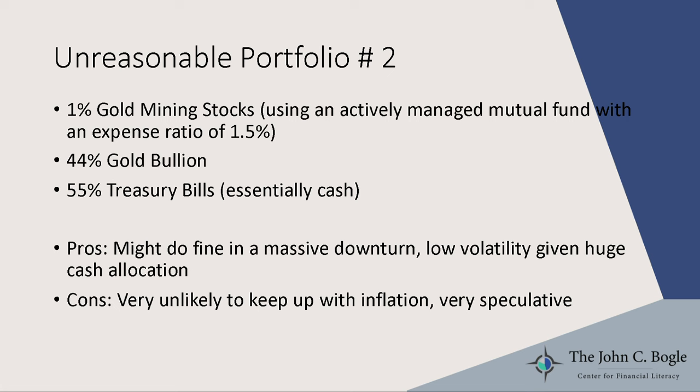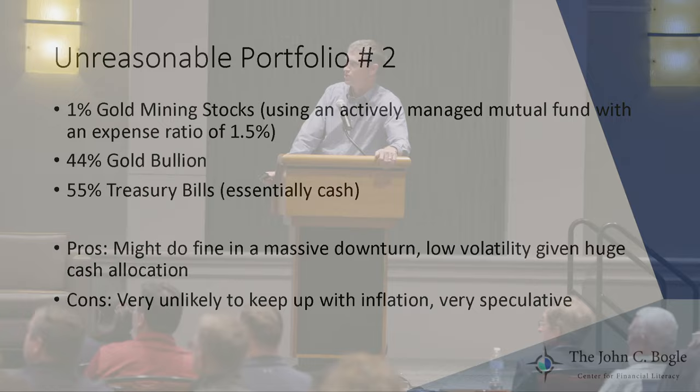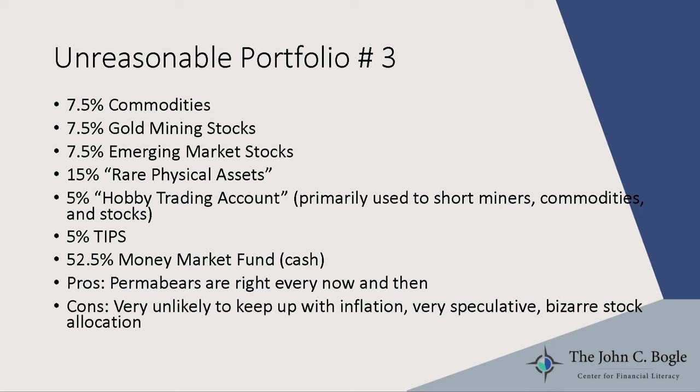This next unreasonable portfolio came from someone who actually emailed me: 1 percent in gold mining stocks using an actively managed mutual fund with a 1.5 percent expense ratio, 44 percent in gold bullion, and 55 percent in Treasury bills. This might do okay in a massive downturn, and it'll have low volatility with all that cash, but it's unlikely to keep up with inflation, extremely speculative, and why would you pay 1.5 percent for anything? Not a reasonable portfolio.